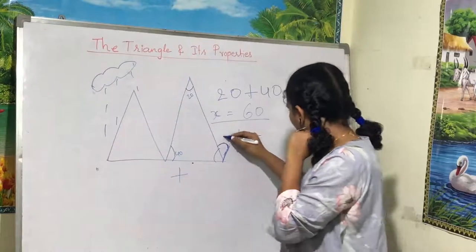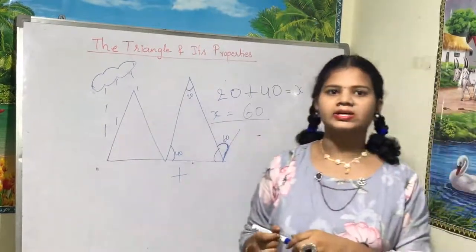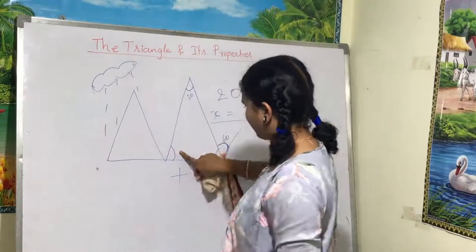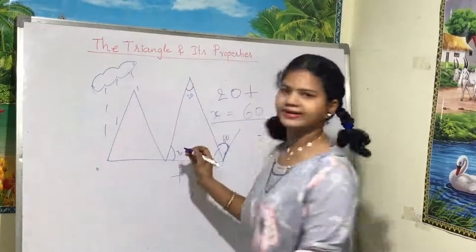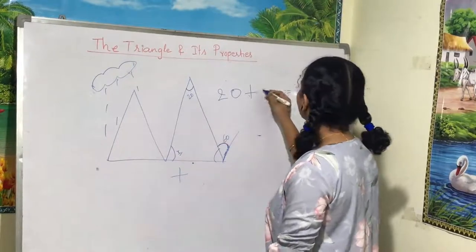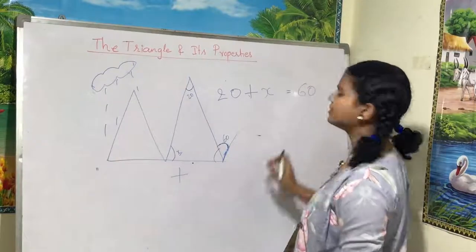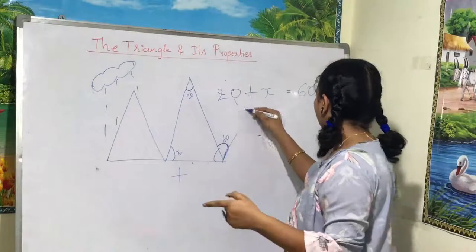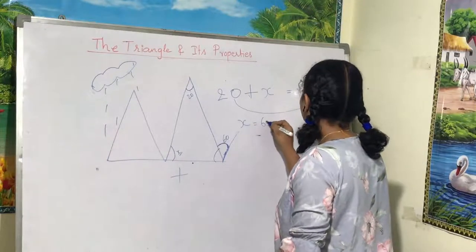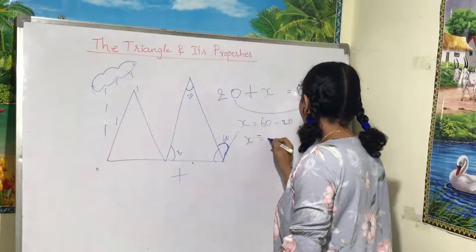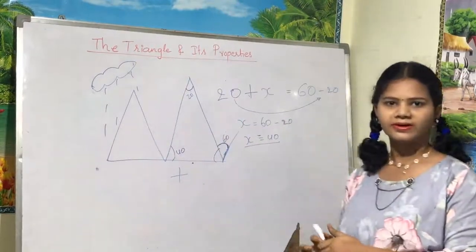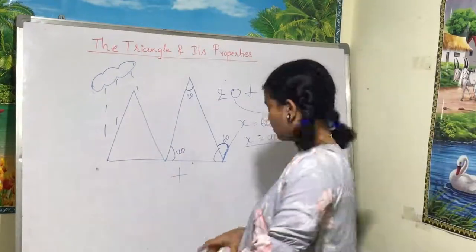So 60 degrees is the exterior angle. Now let's say we need to find an interior angle. Let the interior angle be x. Then 20 plus x equals 60. Using the transposing method, 20 moves to the other side as minus 20, so x equals 60 minus 20, which gives 40. Therefore x equals 40 degrees.